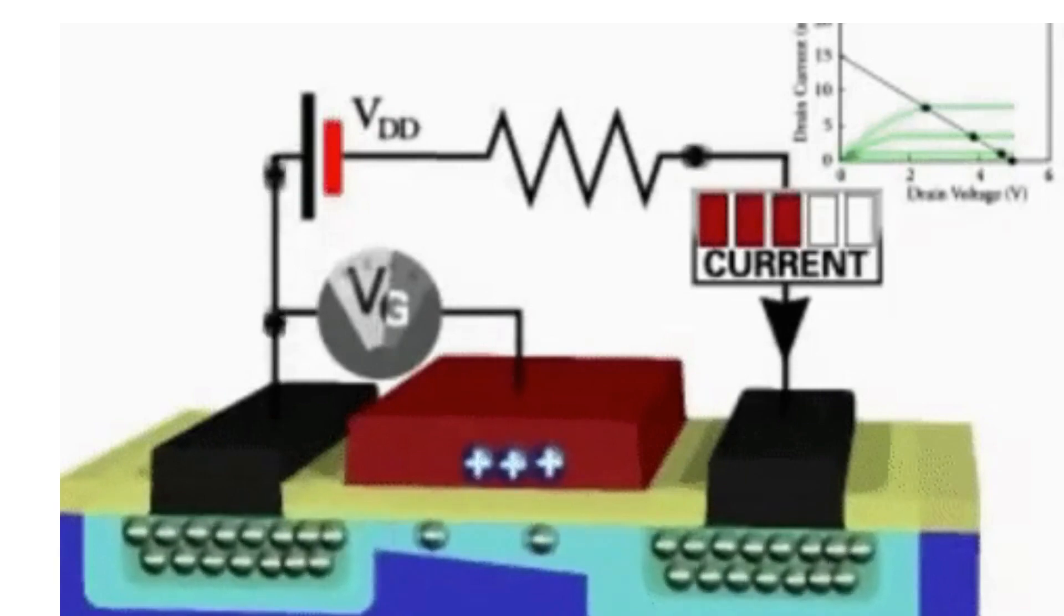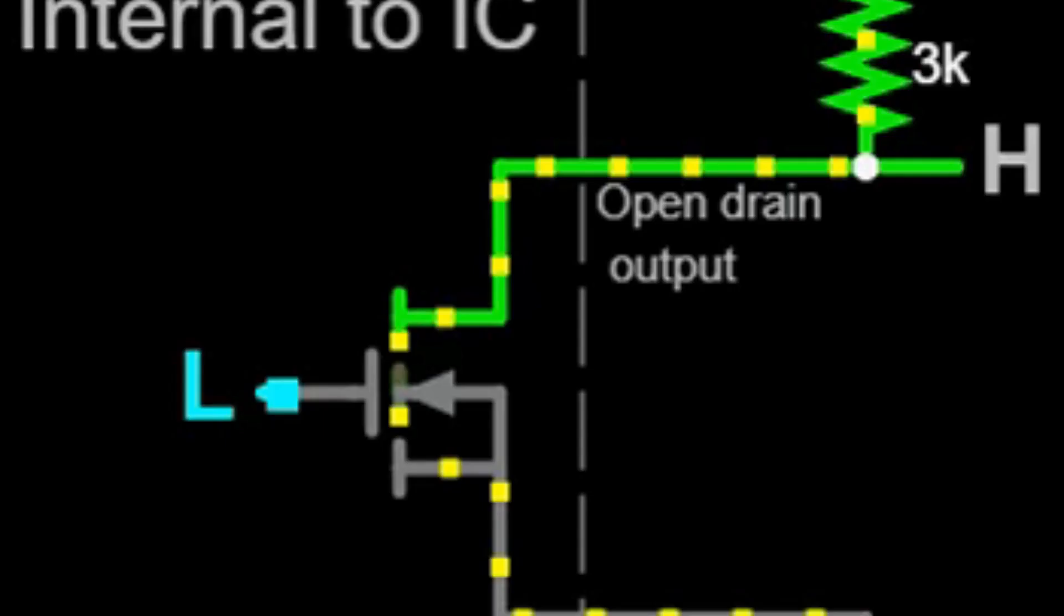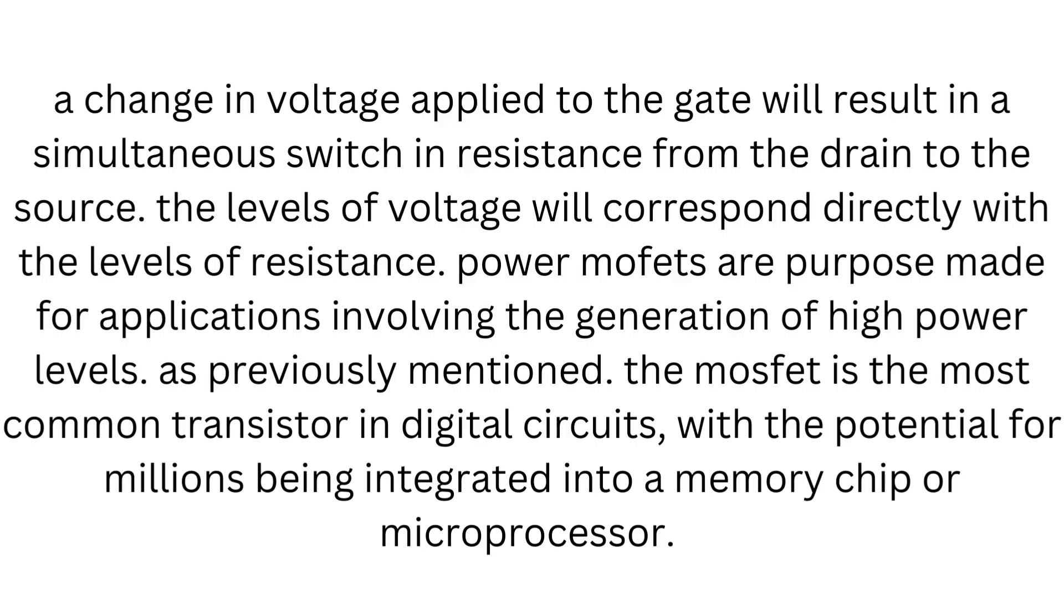The MOSFET gate source pins have a capacitance that prevents rapid switching between states. High current will be necessary for a rapid change between voltage on internal capacitance. It must prompt an automatic switch between a charge source and discharge sink. A change in voltage applied to the gate will result in a simultaneous switch in resistance from the drain to the source. The levels of voltage will correspond directly with the levels of resistance.